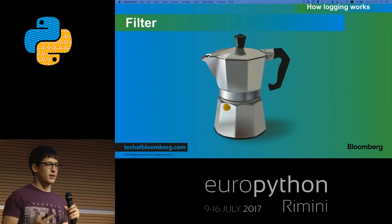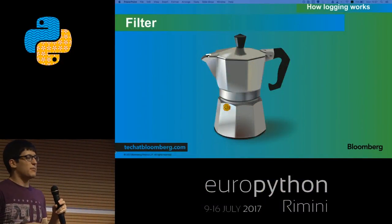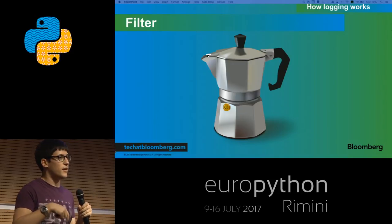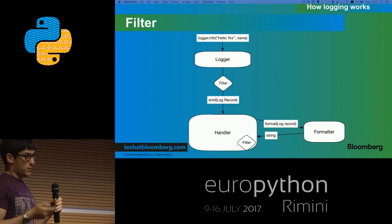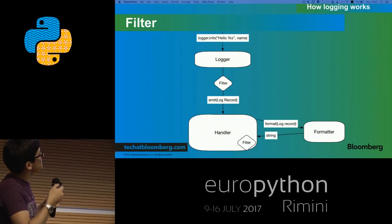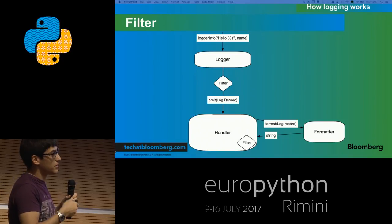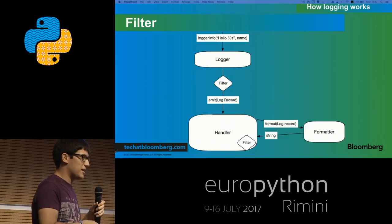On top of all this, we have filters. Filters are a really flexible tool to filter logs based on predefined conditions. The default filter is not that useful, but you can create your own and attach them to your loggers and handlers to filter out some logs you might not want. So the full flow is: create the logger, pass information, it goes through the filters — if all filters return true — we emit the log record, it goes to the handler, which checks its own filters, then formats the record, gets back a string, and sends it out.